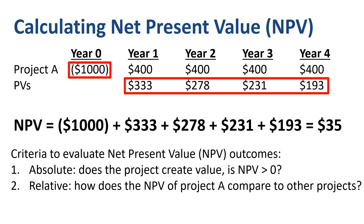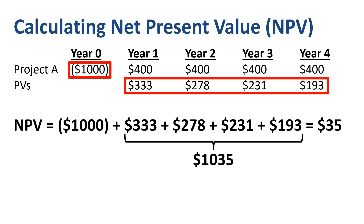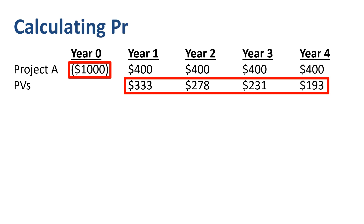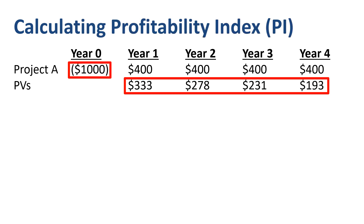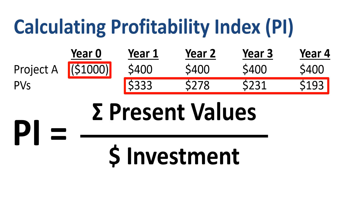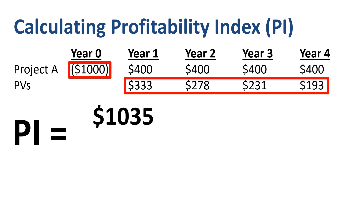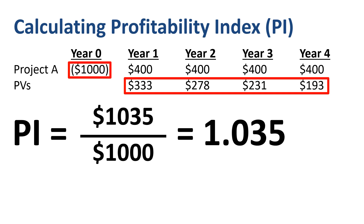There is one important number from the NPV calculation that we need as an input for the Profitability Index: the sum of the present values of the future benefits, which for project A is $1,035. To calculate the Profitability Index, put that sum of present values in the numerator and divide by the amount of the initial investment in the denominator. Working with present value equivalents is how the Profitability Index resembles the NPV method, while dividing by the initial investment is how it resembles the ROI method. $1,035 divided by $1,000 gives a Profitability Index of 1.035.